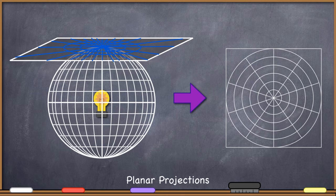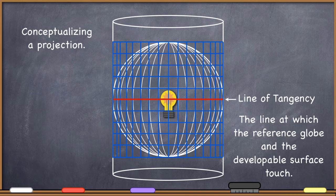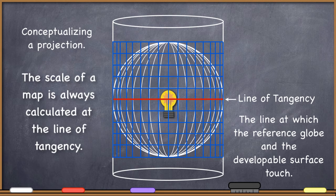I want to point out the line of tangency. The line of tangency is the line at which the reference globe and the developable surface touch. This becomes an incredibly important line for any map because this is the line at which the scale is true. All of these different projections have lines of tangency. If I were to wrap this cylinder around the globe, you can see that it would touch the reference globe along the equator all the way around — therefore the equator, in this particular example, would be the line of tangency.